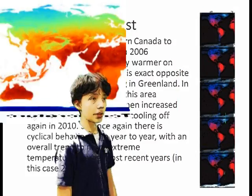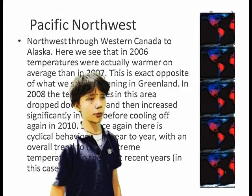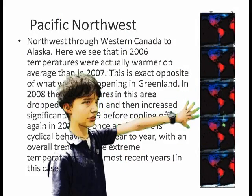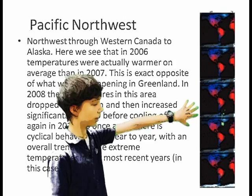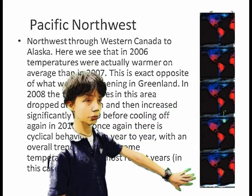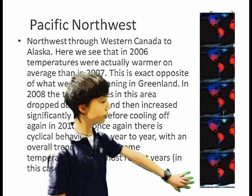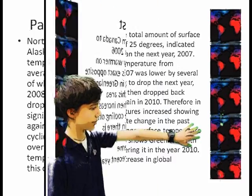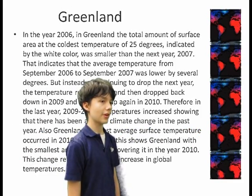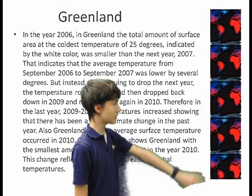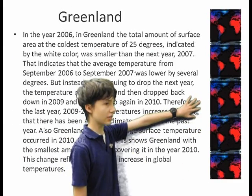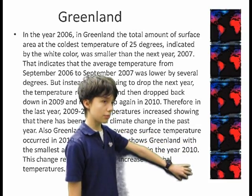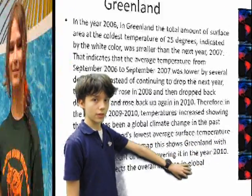The land surface temperature of the Pacific Northwest: in 2006 it was cold, in 2009 it got colder, but in 2010 the temperature rises. Greenland's land surface temperature was at its coldest in 2006, but by 2008 the temperature starts to rise.